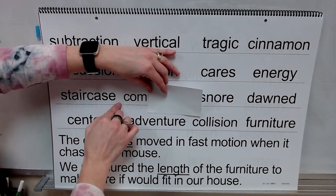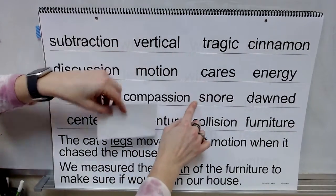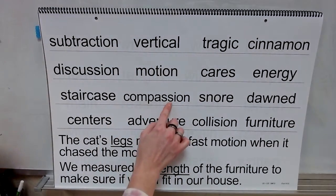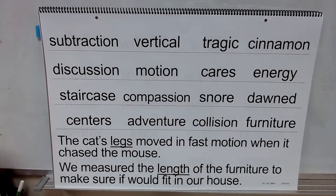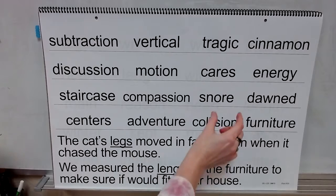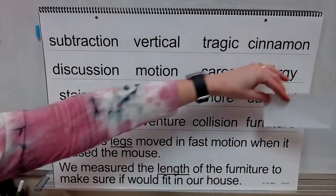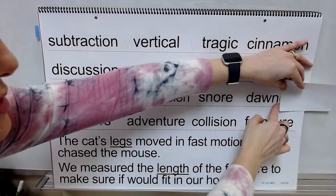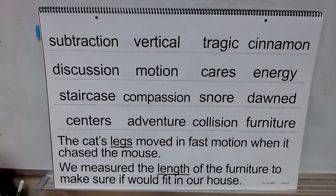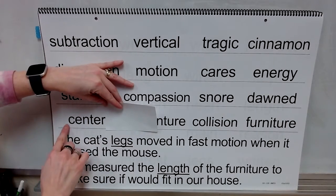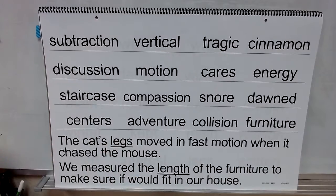Syllable: 'com'. Syllable: 'pass'. Syllable: 'shun'. Blend it. Adjust. What word? Compassion. Sound: 'or'. Word: snore. Base word: dawn. Add your ending. Word: dawned. Base word: center. Add your ending. What word? Centers.